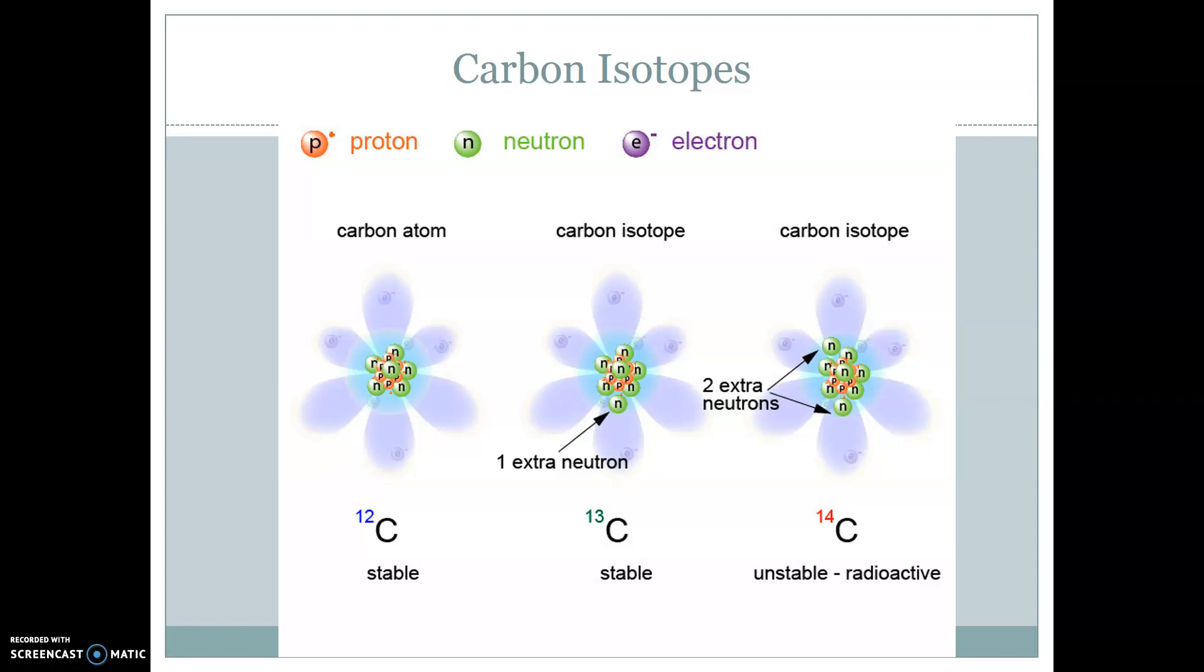And specifically, we look at isotopes because some of them are stable, like carbon-12, and then others of them are unstable, like carbon-14. Carbon-14 is considered to be radioactive, and we can use that for some important things.